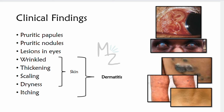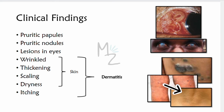Clinical findings include pruritic papules and nodules that develop in response to adult worm proteins, visible as dark lesions. When microfilariae migrate from the subcutaneous tissue to the eyes, they cause lesions that can lead to blindness. Wrinkled, thickened, scaled, and dry skin with severe itching are manifestations of dermatitis. Complications such as blindness, hanging groin, and lizard skin can also occur.